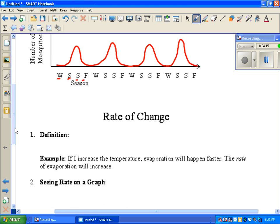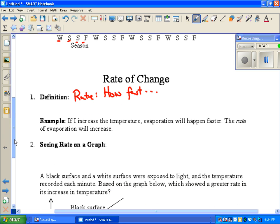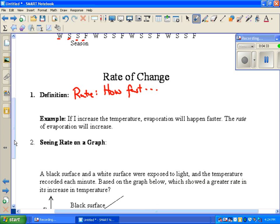Now, the other thing we need to talk about is the rate of change. The definition of rate is how fast something is occurring. So for an example, if I increase the temperature, evaporation will happen faster. If it's faster, it's got a greater rate.